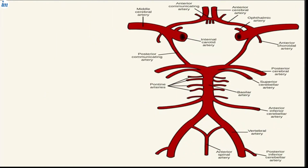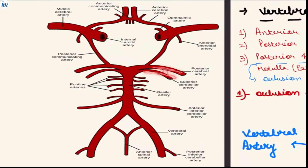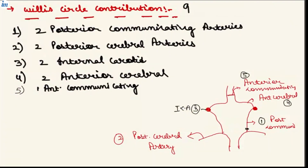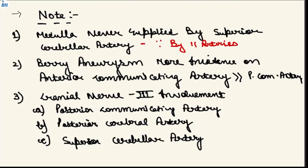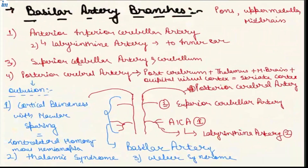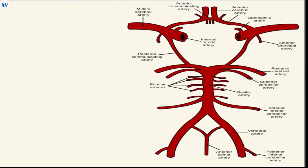Cranial nerve III (oculomotor nerve) is sandwiched between the superior cerebellar artery and the posterior cerebral artery. Whenever there is a block or occlusion in these arteries, cranial nerve III gets compressed and the person will have oculomotor manifestations. CN III involvement can occur due to a block in the posterior communicating artery, posterior cerebral artery, or superior cerebellar artery.